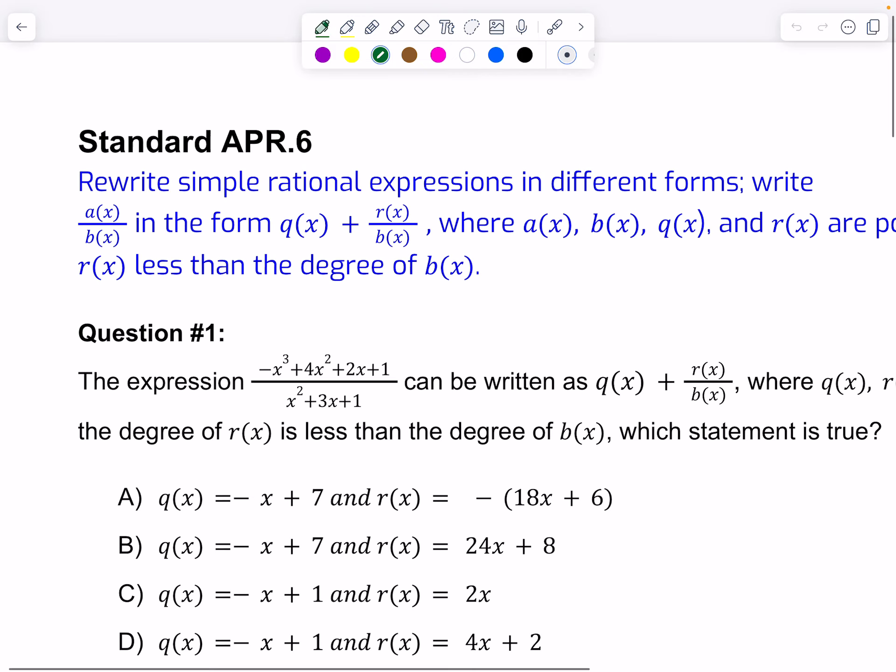Write A(x) over B(x) in the form Q(x) plus R(x) over B(x). This means we're taking a polynomial and dividing it by another polynomial, then writing it out in the form of its quotient plus the remainder over the divisor.